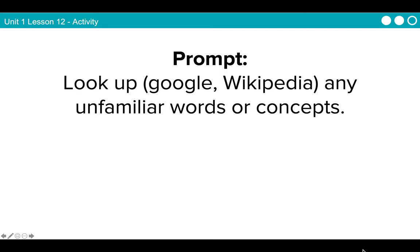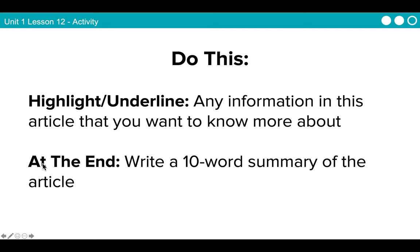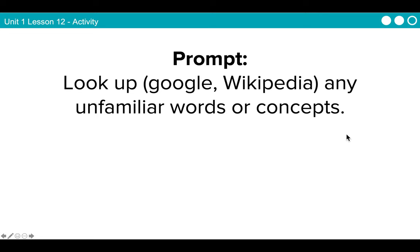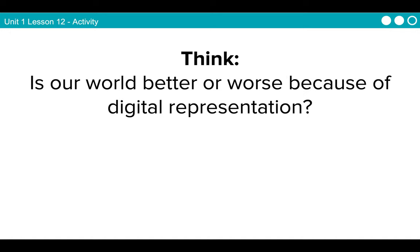Any of those items that you've highlighted that you want to know more about, go ahead and look them up — Google it, check Wikipedia. Make sure you're clear in your head about what those items, words, or phrases are, to make sure you're clear about the entire article. Then, going back to our first prompt: is our world better or worse because of digital representation? Base your thoughts on the article that you've just read.